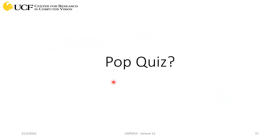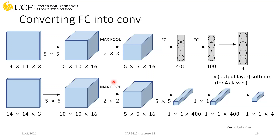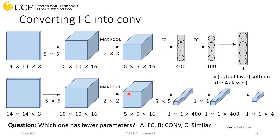So we have a pop quiz. The top network uses fully connected layers and the bottom is fully convolutional — both take the same 14x14x3 input and produce 4 predictions. The question is: which of these two networks will have fewer parameters — the FC version, the convolutional version, or will they have the same number of parameters?